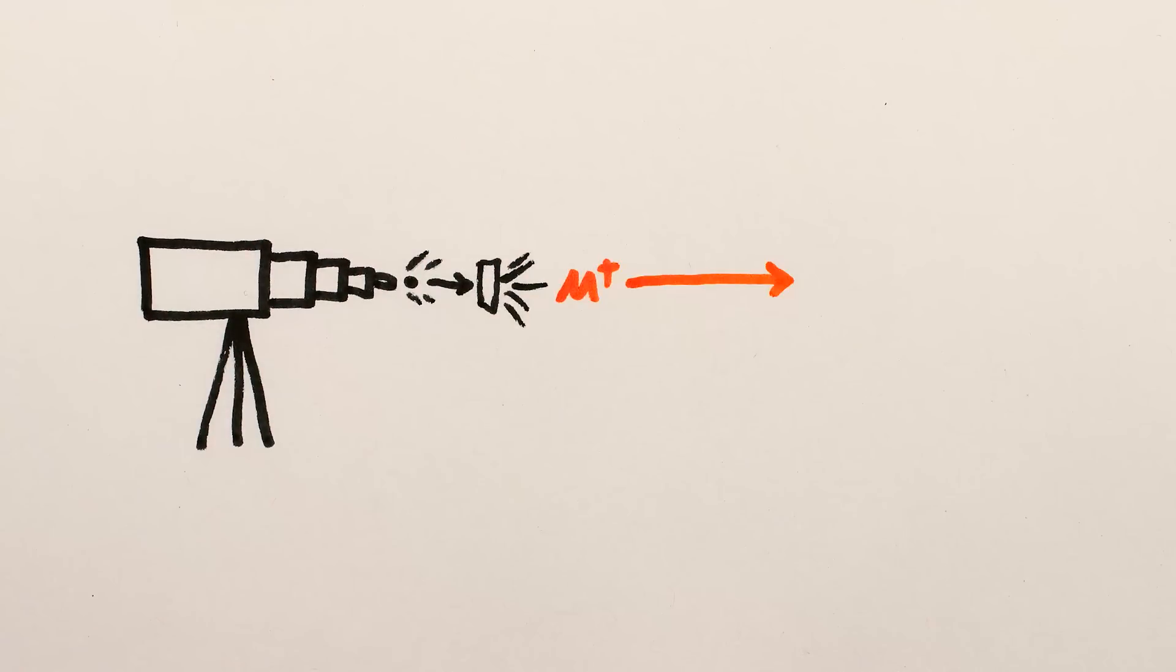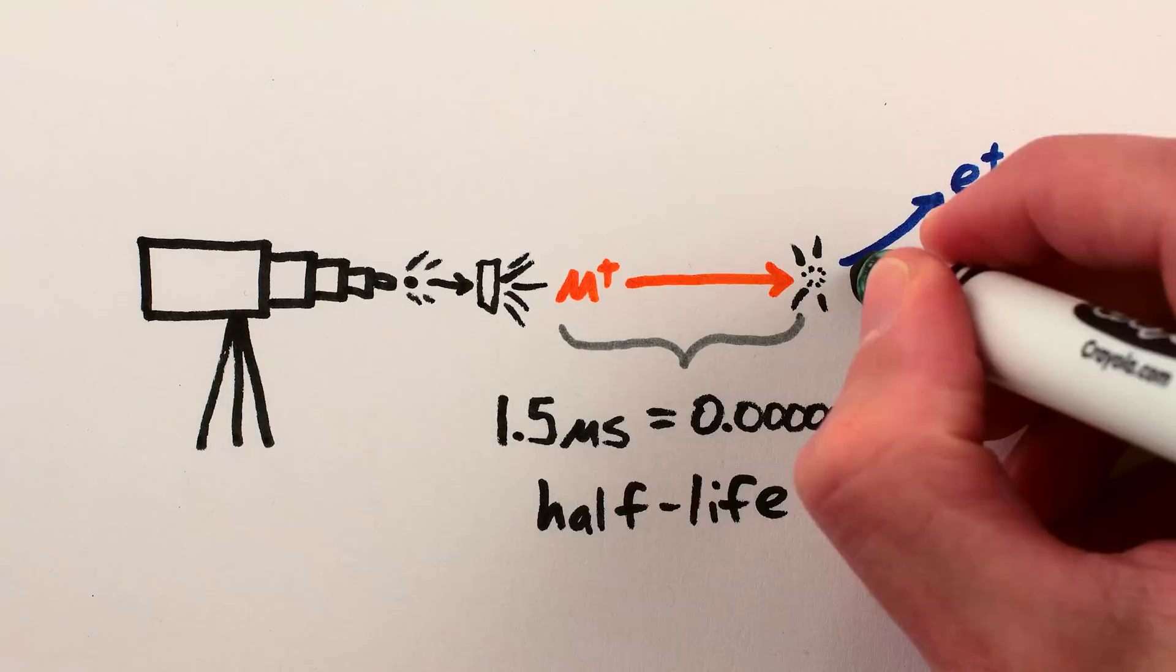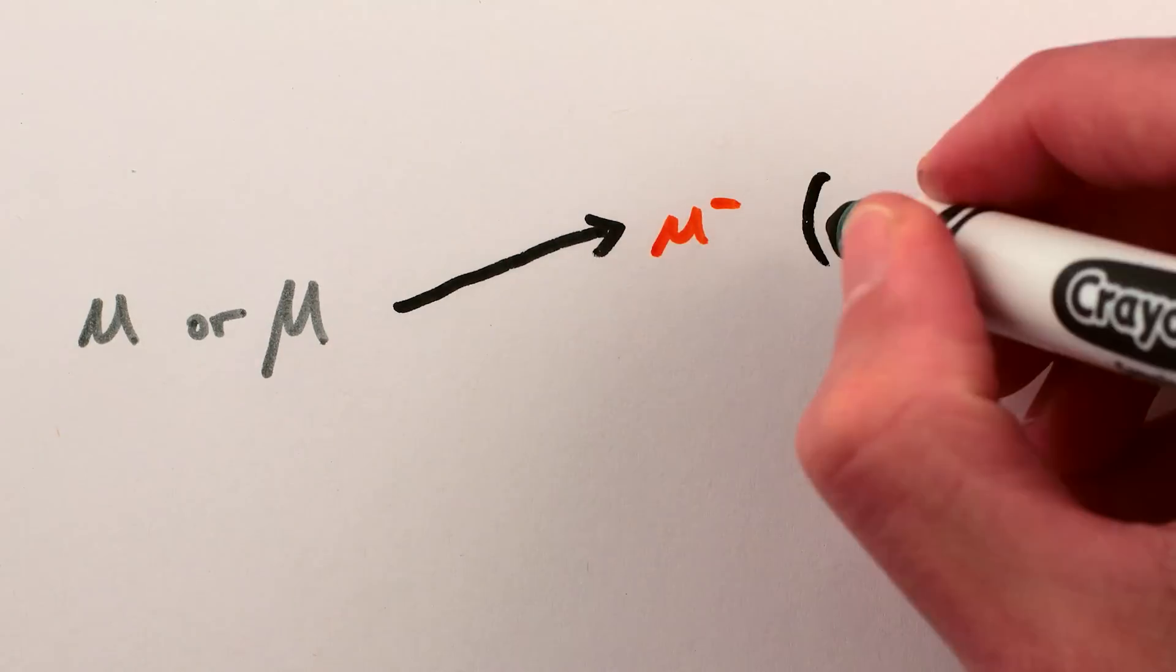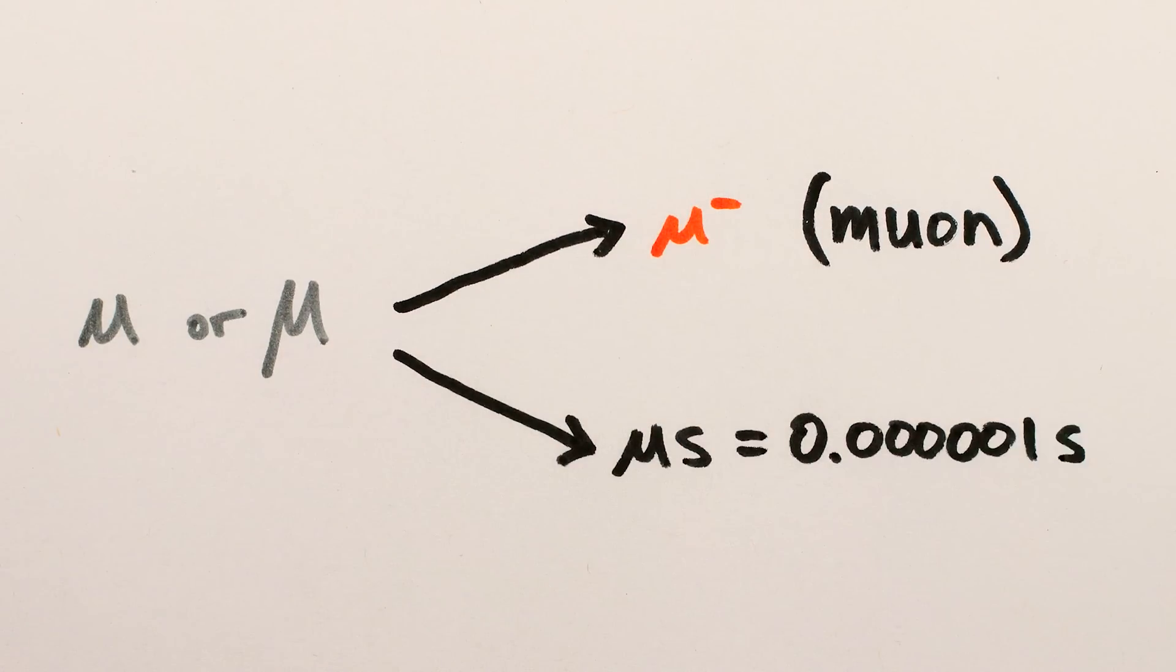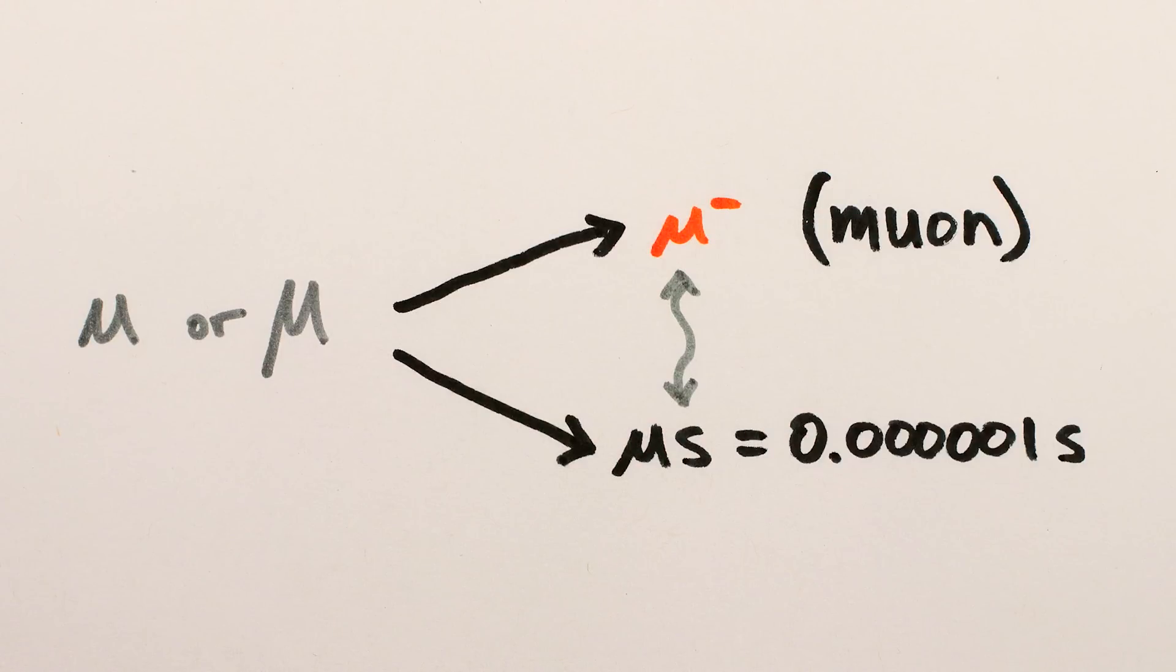Because muons, if you make them in a laboratory, only have a 1.5 microsecond half-life before they spontaneously decay into an electron or positron and some neutrinos. And yeah, the Greek symbol mu is used for both muon and for microsecond, which can certainly be a little confusing. But the lifetime of muons is really close to a microsecond, so it's also kind of beautifully appropriate.